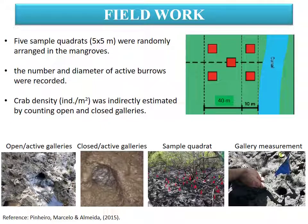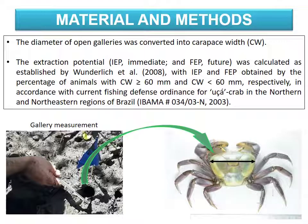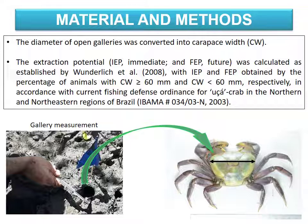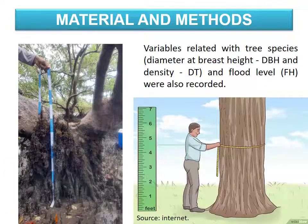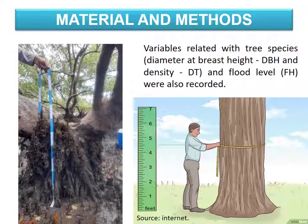The number and diameter of active burrows were recorded. Crab density was indirectly estimated by counting open and closed galleries. The diameter of open galleries was converted into carapace width. The immediate and future extraction potentials were obtained by the percentage of animals larger and smaller than 60 mm, respectively, in accordance with current fishing ordinance of Ucá crab in the northern and northeastern regions of Brazil. Variables related to tree species and flood level were also recorded.